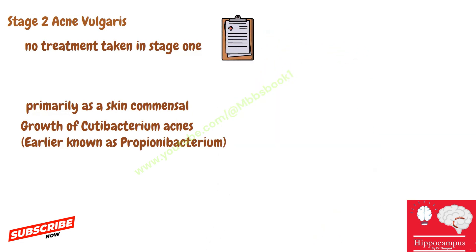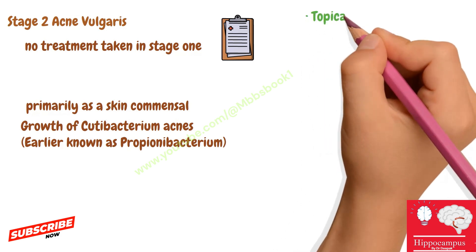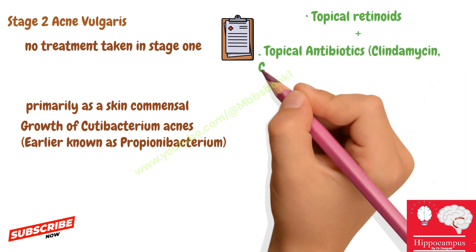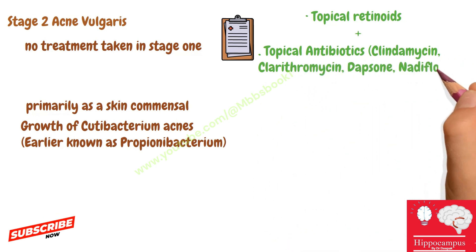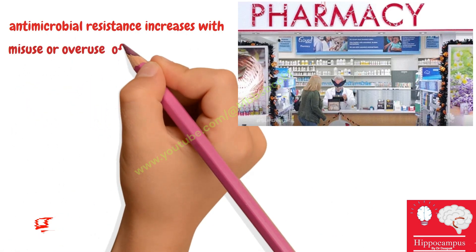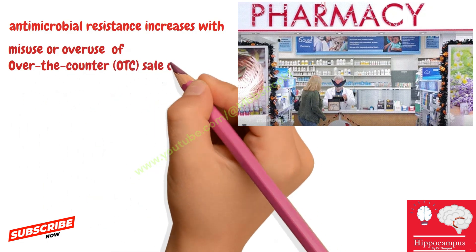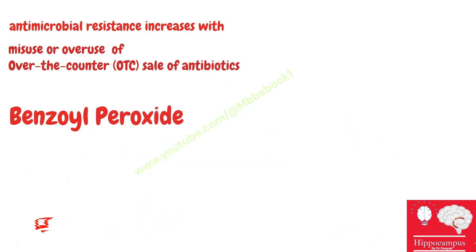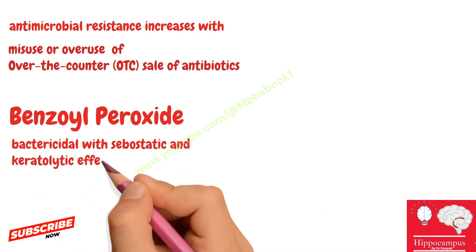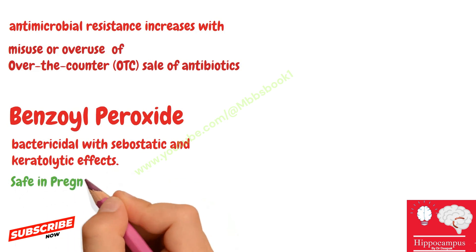For stage two treatment, we must treat stage one as well. Topical antibiotics used include clindamycin, nadifloxacin, clarithromycin, and dapsone, combined with topical retinoids. Due to increasing antibiotic resistance from misused over-the-counter medications, we also use benzoyl peroxide, which releases nascent oxygen that is bactericidal as well as keratolytic. Benzoyl peroxide is an important drug and is safe in pregnancy.